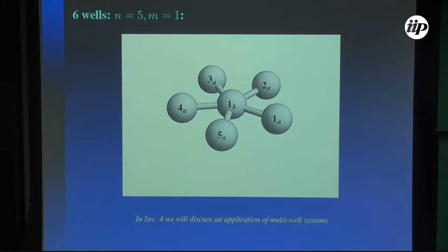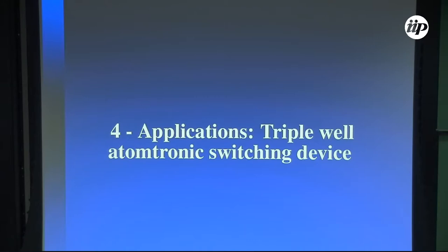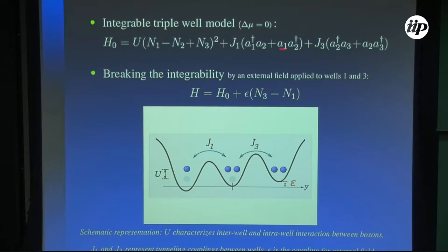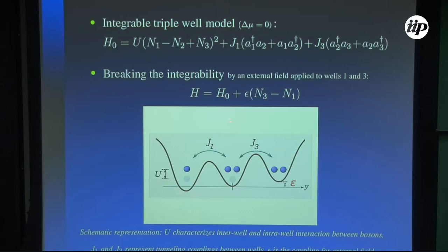As an application, I want to discuss a triple-well atomtronic switching device. We begin with the integrable triple-well model — three wells, where U is the inter-well and intra-well interaction between the bosons, J1 is the coupling for the tunneling of bosons between wells 1 and 2, and J3 between wells 2 and 3. We break integrability by applying an external field epsilon to wells 1 and 3 by adding this epsilon term to the Hamiltonian. We then have two scenarios: the integrable case with no external field, and the non-integrable case when epsilon is nonzero.